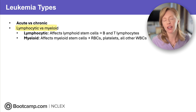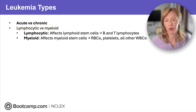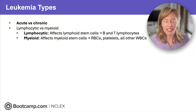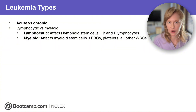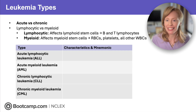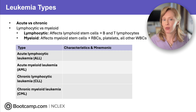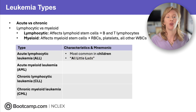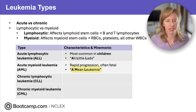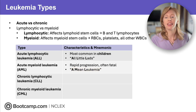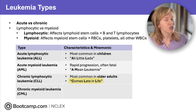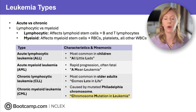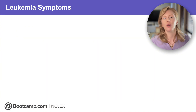There are different types of leukemia — acute or chronic, and lymphocytic or myeloid. Lymphocytic leukemias affect lymphoid stem cells; myeloid leukemias affect myeloid stem cells. On the NCLEX these are treated the same way, but for nursing school tests: acute lymphocytic leukemia affects 'all little labs' — it's more common in children. Acute myeloid leukemia is 'the mean leukemia' — most commonly fatal and progresses rapidly. Chronic lymphocytic leukemia 'comes late in life' — more often affects older adults. Chronic myeloid leukemia is 'the chromosome mutation leukemia' caused by the mutated Philadelphia chromosome.